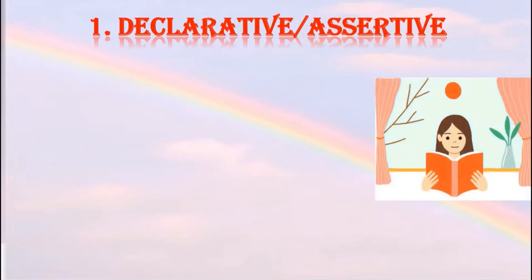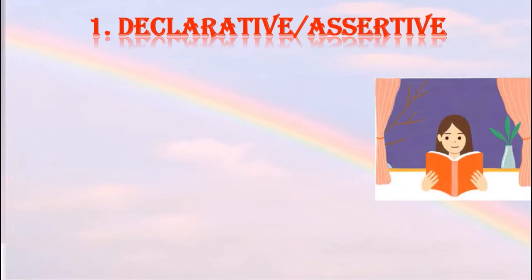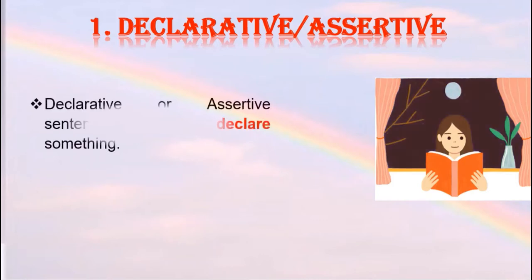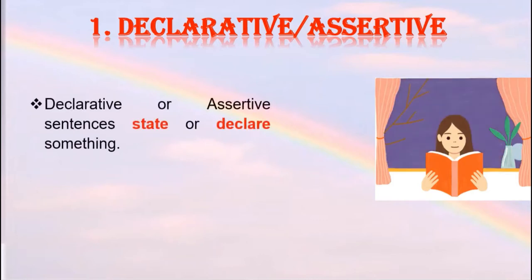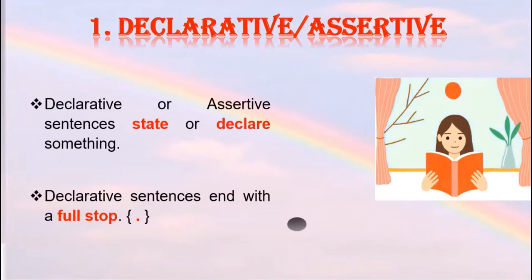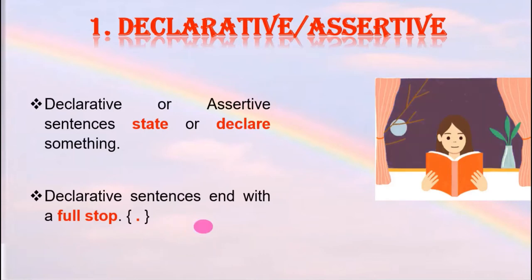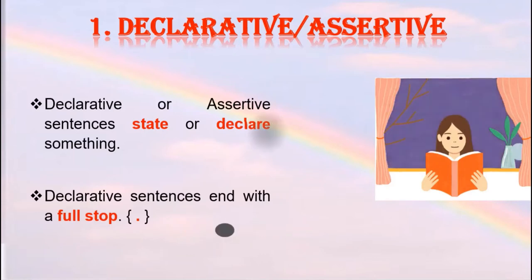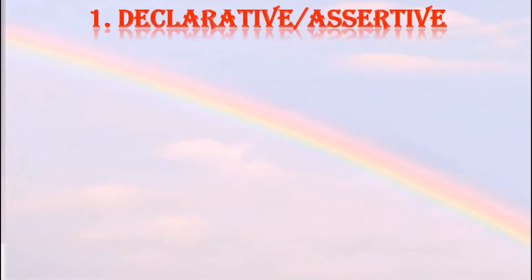A declarative or assertive sentence states or declares something. These types of sentences always end with a full stop. Let me give you some examples of declarative or assertive sentences to make the concept clear.